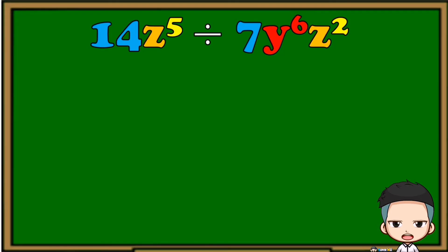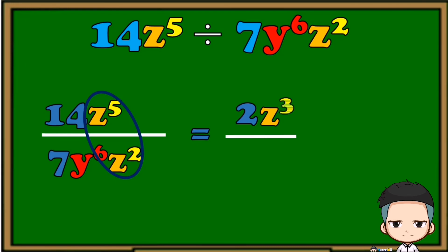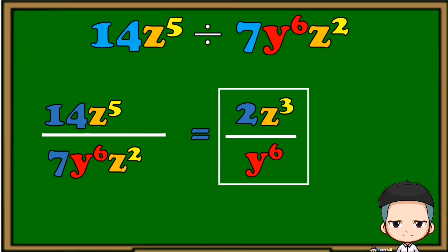Another one: 14z raised to 5 divided by 7y raised to 6 z squared. Put them in fraction form and divide the numerical coefficients. Since z raised to 5 and z squared have the same variable, we divide them — copy the variable z and subtract their exponents. Lastly, copy y raised to 6 on the denominator. The final answer is 2z cubed over y raised to 6.